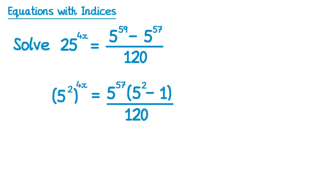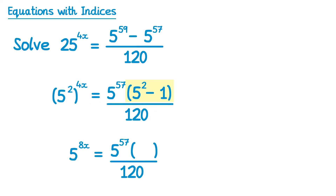Now if we look at the left hand side, we've got 5 squared to the power 4x. We can use the bracket-to-the-power law: multiply 2 and 4x to get 8x, so it's 5 to the power 8x. On the right hand side, we focus on the bracket. Writing everything else the same on the fraction, we tidy up the bracket: 5 squared is 25, take away 1 is 24, so this bracket is just 24.